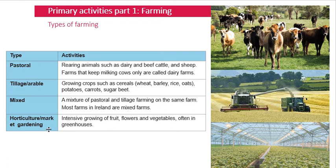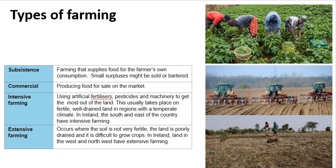The final type on this slide is horticulture or market gardening — basically using greenhouses to grow fruits, vegetables, and flowers. For example, you might have heard of the company Keelings, who grow things like strawberries using greenhouses. Greenhouses mimic the perfect conditions needed for a crop, providing the right temperature and the right amount of light. Market gardening is very popular in north Dublin.